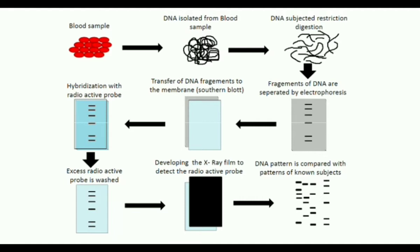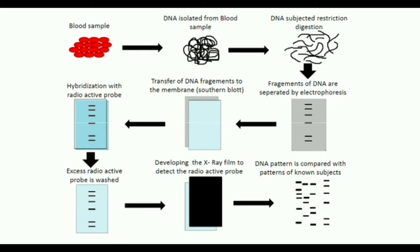The sample DNA is first enzymatically fragmented using a suitable restriction endonuclease. The restriction endonuclease cleaves at specific restriction sites in the DNA. The DNA fragments produced are double-stranded DNA. These restriction fragments are generated by restriction digestion using a restriction enzyme.